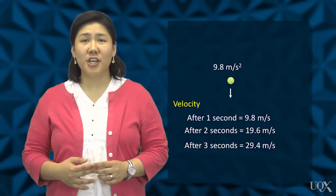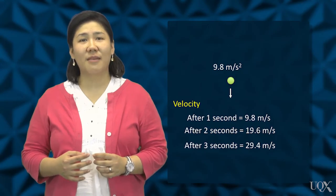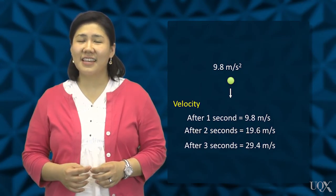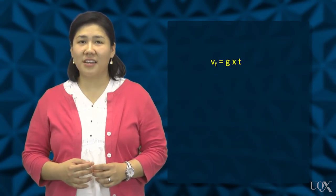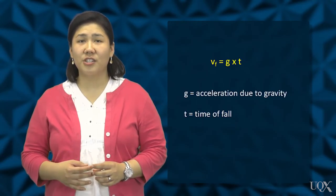The formula for determining the velocity of a falling object after a time t seconds is vf equals g times t, where g is the acceleration due to gravity.